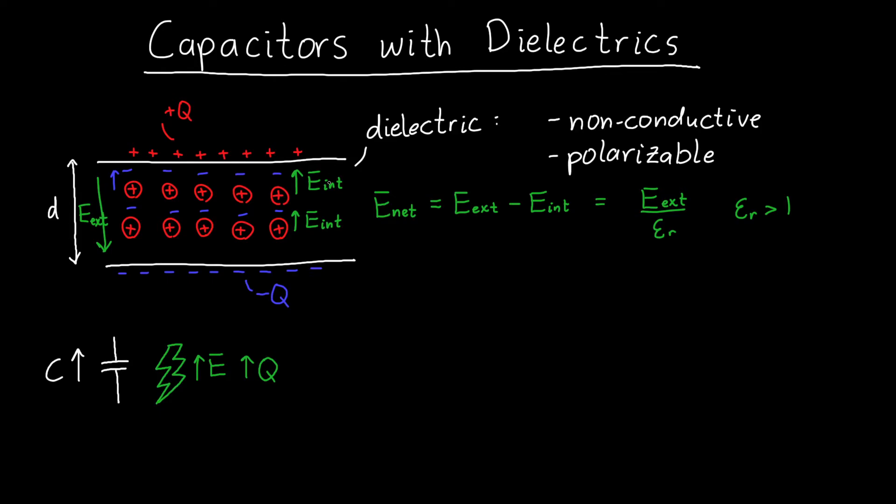Now because my electric field inside is smaller, my voltage, which is just my net electric field inside times the distance, the separation between the two plates, this is also smaller. So it's, in fact, it's one over epsilon r times what it would be without the material.